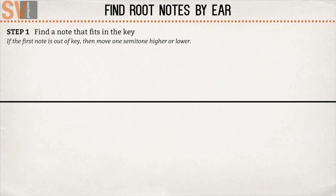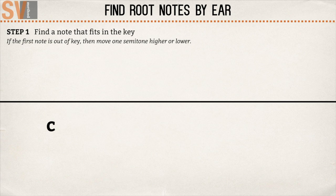So we choose a note, C. We play it. It's not in key. If you're not sure about it, it can help to play it one octave higher. So we move one semitone higher, C sharp. Now we've found a note that's in the key.